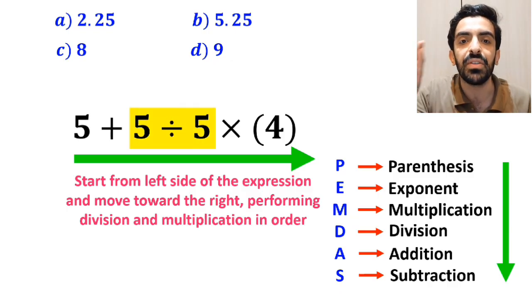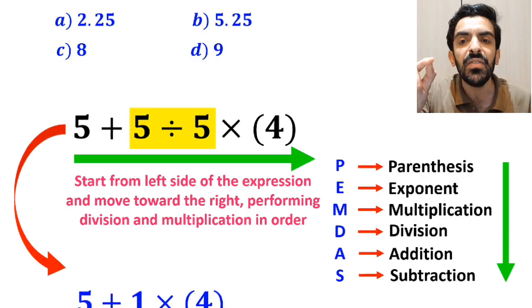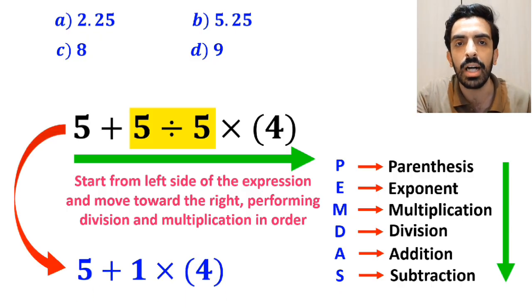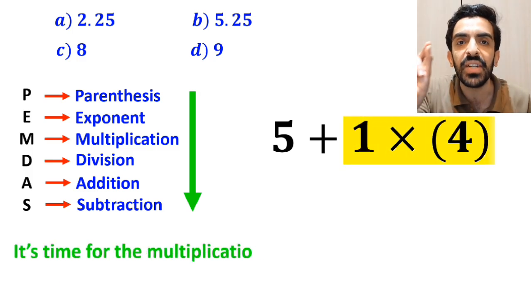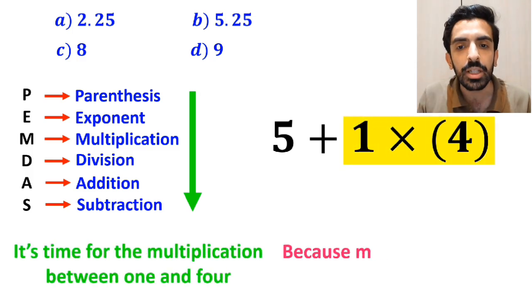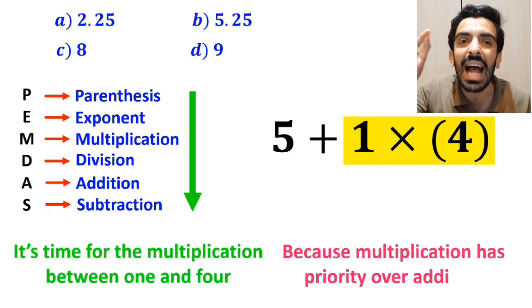So, first we perform the division between 5 and 5, which simplifies this expression to 5 plus 1 then times 4. In the next step, it's time for the multiplication between 1 and 4, because multiplication has priority over addition.